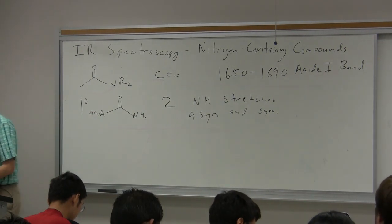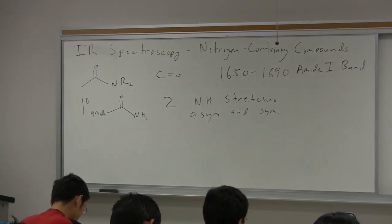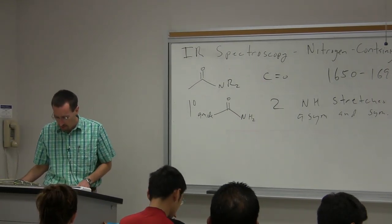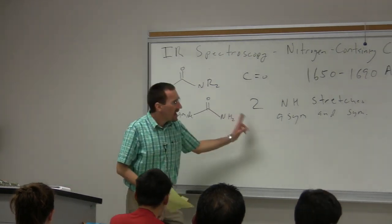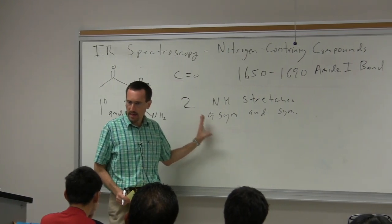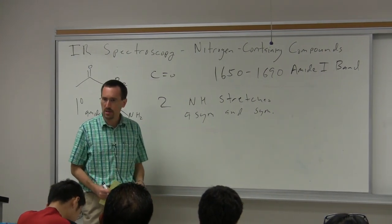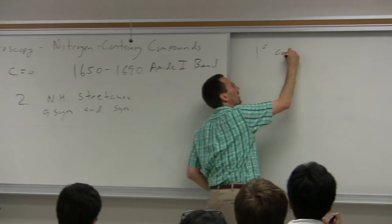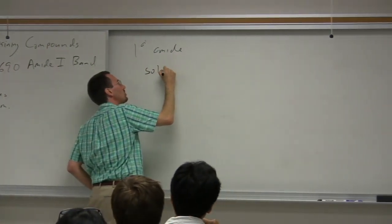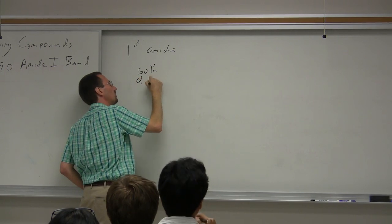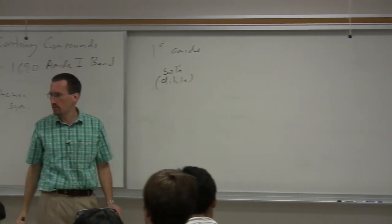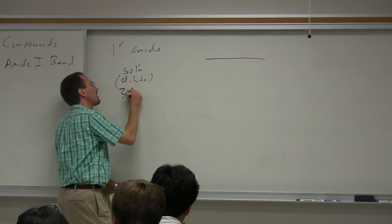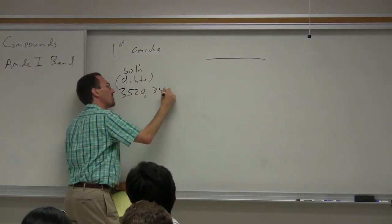Their frequency is going to depend, obviously it's going to be in that region above 3000 where you get OHs and NHs. Amides, just like carboxylic acids, are very prone to hydrogen bonding, so often you'll see different behavior with different states. For a primary amide in dilute solution, in other words not super concentrated so you don't have a lot of hydrogen bonding, those bands show up at about 3520 and about 3400.